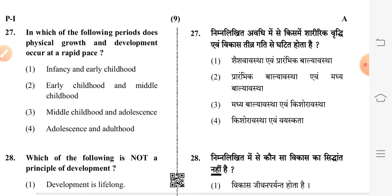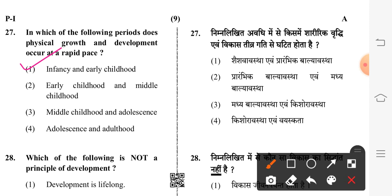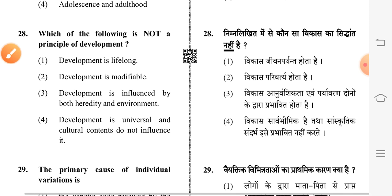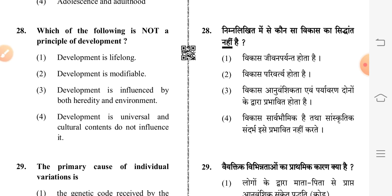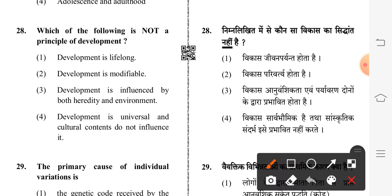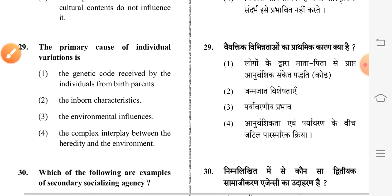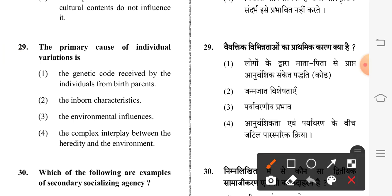Twenty-seventh question: in which of the following periods does physical growth and development occur at a rapid pace? Answer: infancy and early childhood. Which of the following is not a principle of development? Twenty-ninth option is correct: development is universal and cultural contexts do not influence it. The primary cause of individual variations is — fourth option: the complex interplay between heredity and the environment.